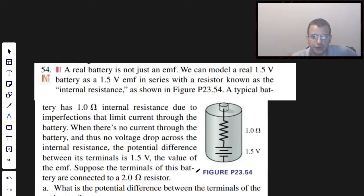A real battery is not just an electromotive force. We can model a real 1.5 volt battery as a 1.5 volt EMF in series with a resistor, as shown in figure 23.54. A typical battery has a 1 ohm internal resistance due to imperfections that limit current through the battery. When there's no current through the battery and there's no voltage drop across the internal resistance, the potential difference between the terminals is 1.5 volts, the value of the EMF.